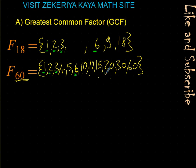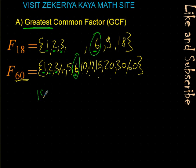From these common factors, the biggest one — 6 — we call it the greatest common factor. So how can we find the greatest common factor easily? As we did in prime factorization, we will use the same kind of idea.